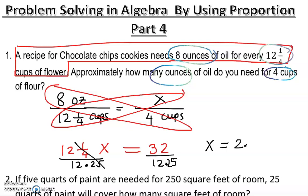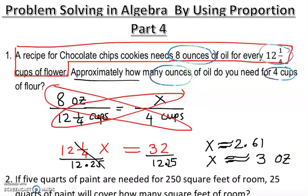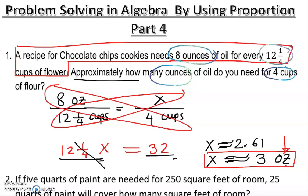Dividing gives us x approximately equal to 2.61. They said approximately how many ounces, so we say approximately three ounces are needed. Don't forget to write down the unit — that's always a good thing. You can also just write twelve and one-quarter instead of 12.25 — it will give you the same answer.